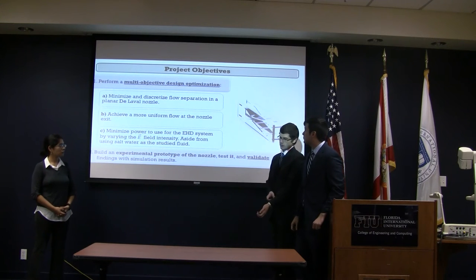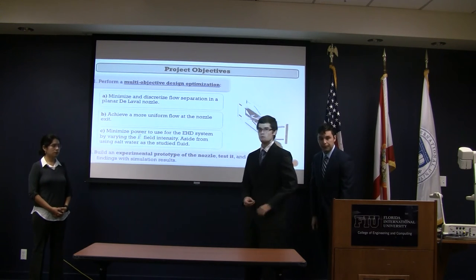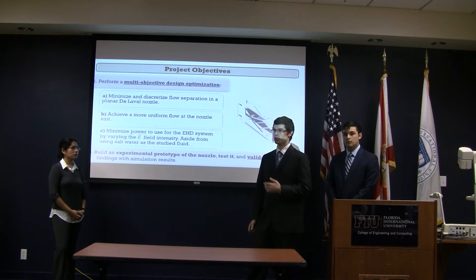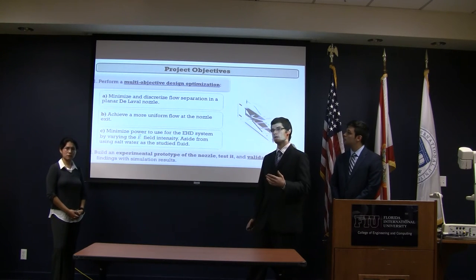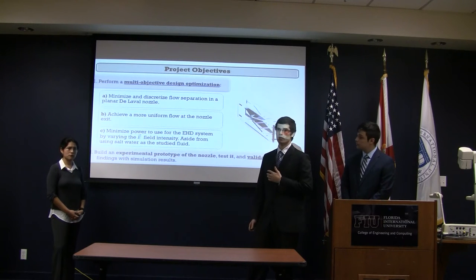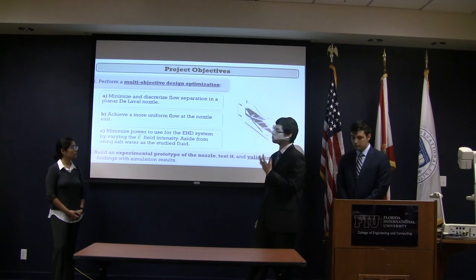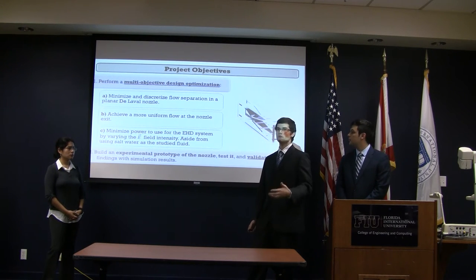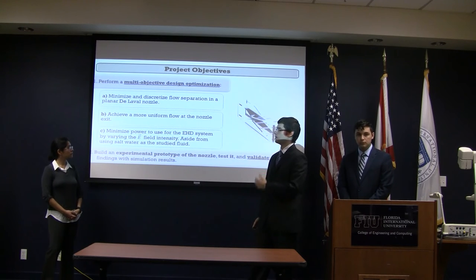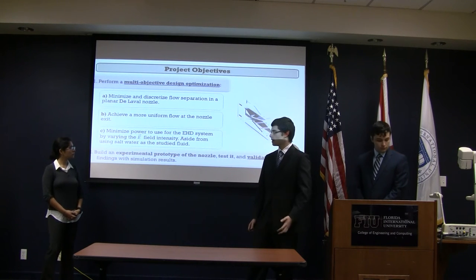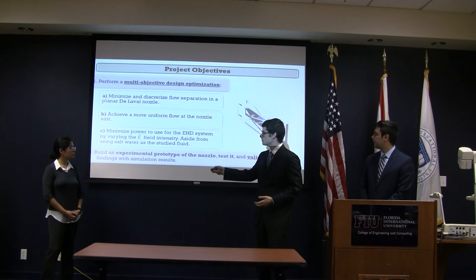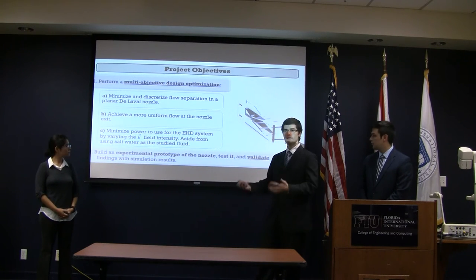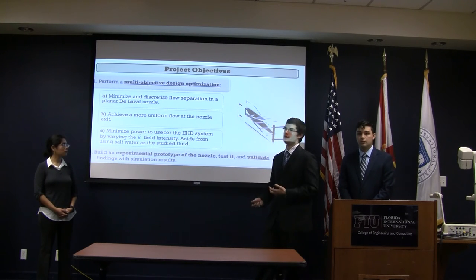For project objectives, we have two main objectives. The first is a multi-objective design optimization with three goals: minimize and discretize flow separation in the Laval nozzle; achieve a more uniform flow at the nozzle exit; and minimize power used by the electro-hydrodynamic actuators by varying the electric field intensity. The second main objective is to build a prototype of the nozzle and testing setup to validate the CFD analysis results.